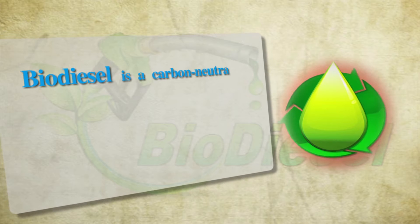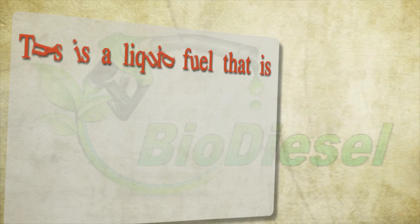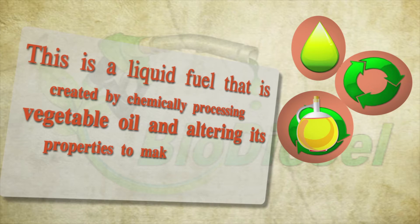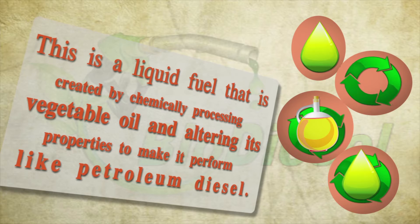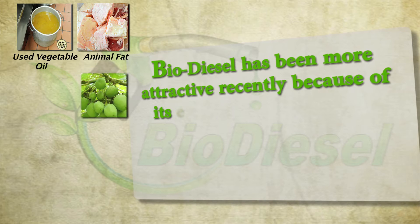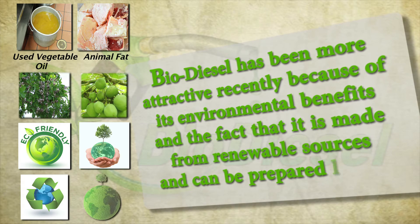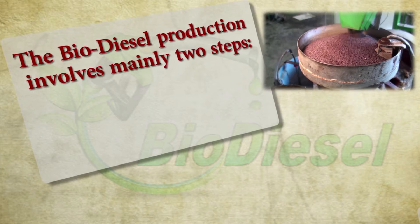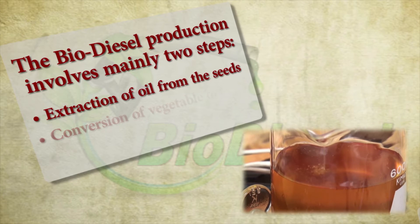Biodiesel is a carbon neutral source of fuel and is increasingly becoming popular. It is a liquid fuel created by chemically processing vegetable oil and altering its properties to make it perform like petroleum diesel. Biodiesel has been more attractive recently because of its environmental benefits, the fact that it is made from renewable sources, and can be prepared locally. Biodiesel production involves mainly two steps: extraction of oil from seeds, and conversion of vegetable oil to biodiesel.